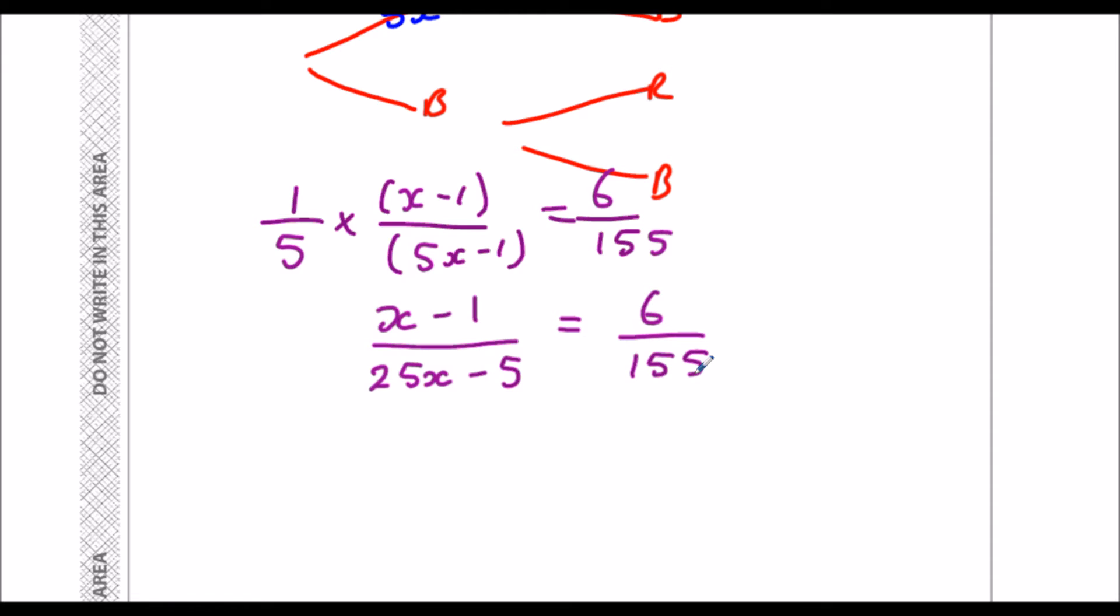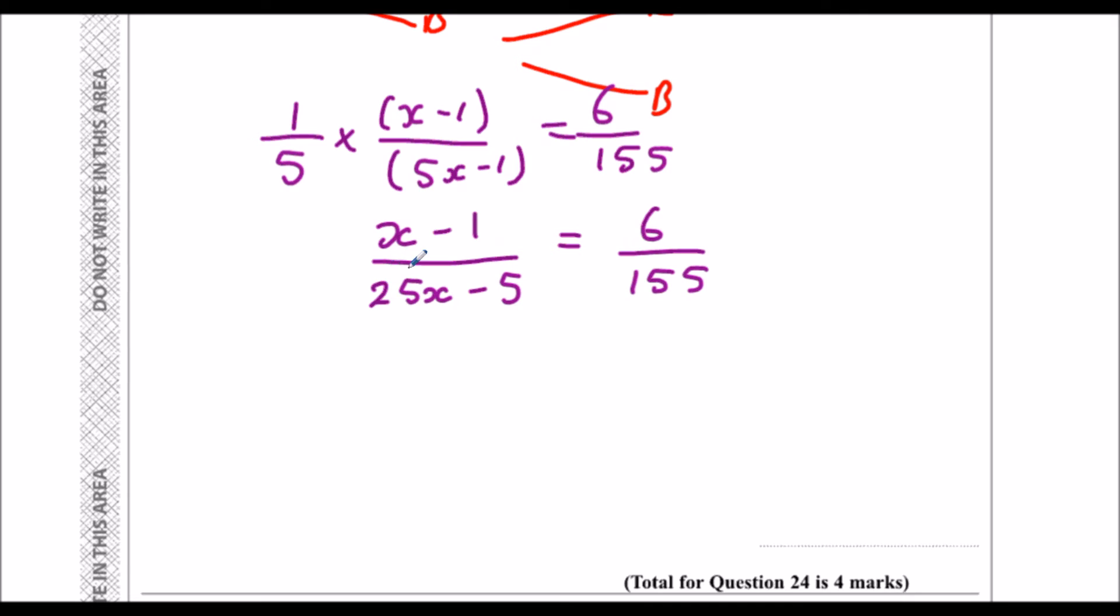I don't like fractions in my equation, so to get rid of a divide, I multiply both sides by that. So if I want to get rid of 25x minus 5, I need to multiply both sides by 25x minus 5. So that will give me 25x minus 5 over 155. And then the same again, to get rid of a divide by 155, I multiply both sides by 155.